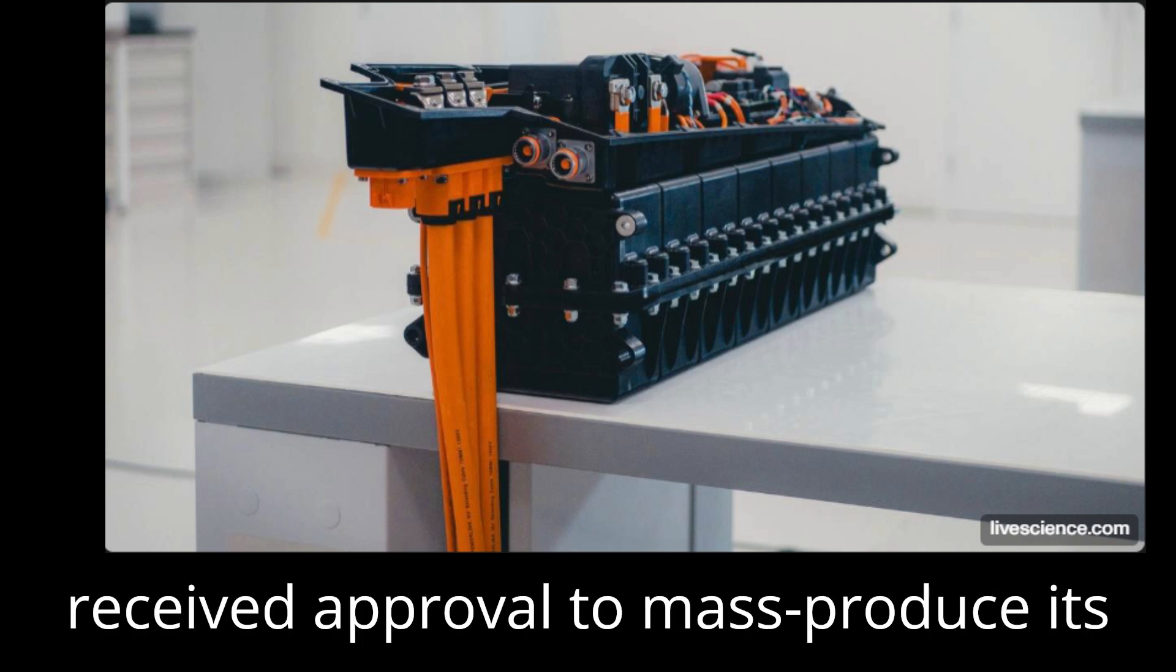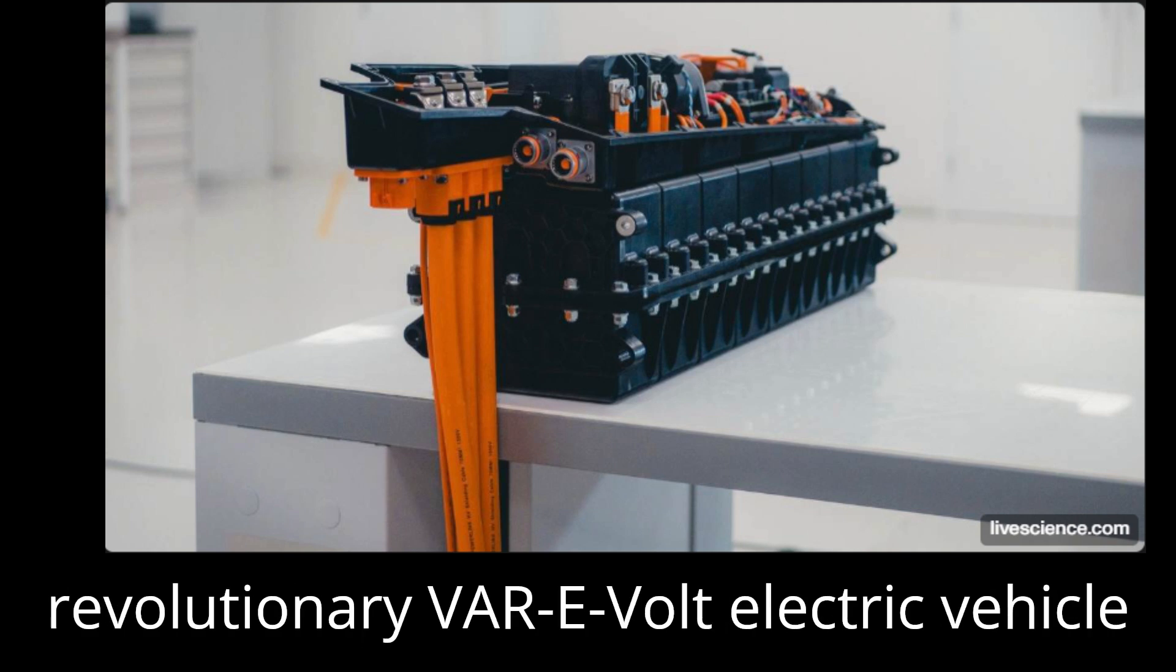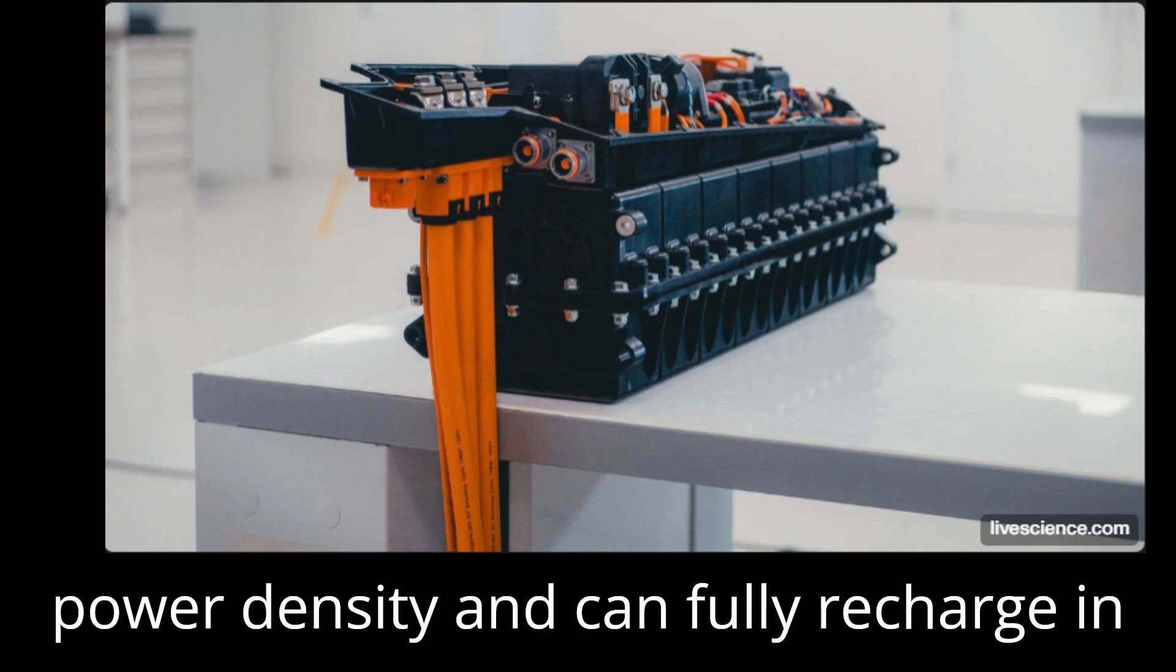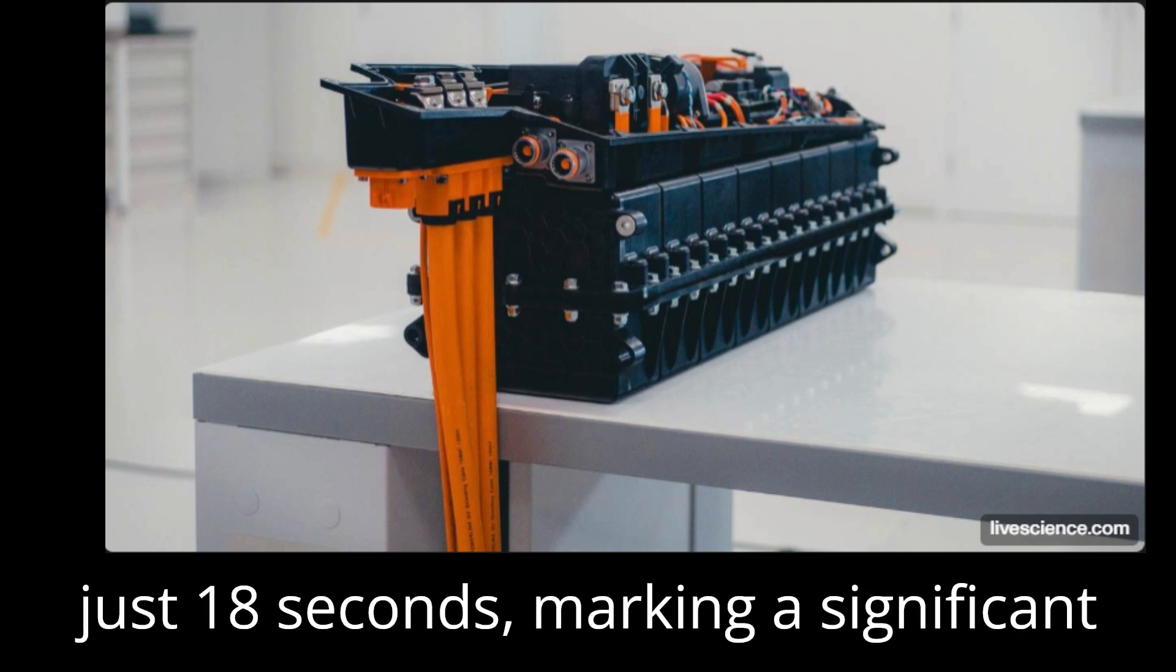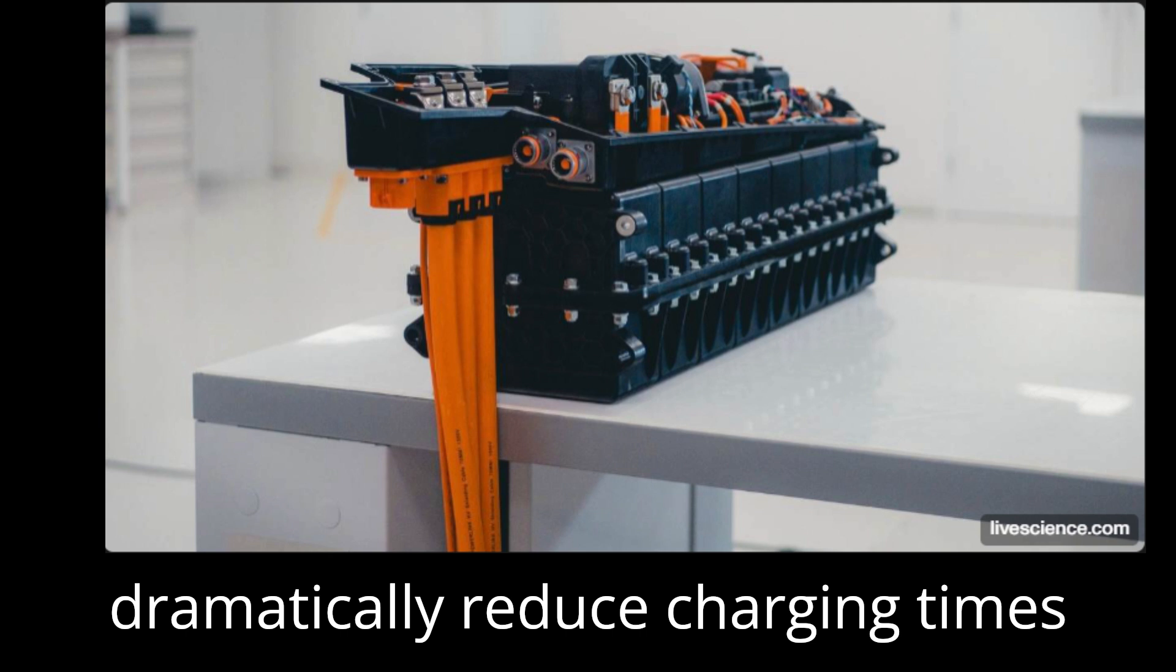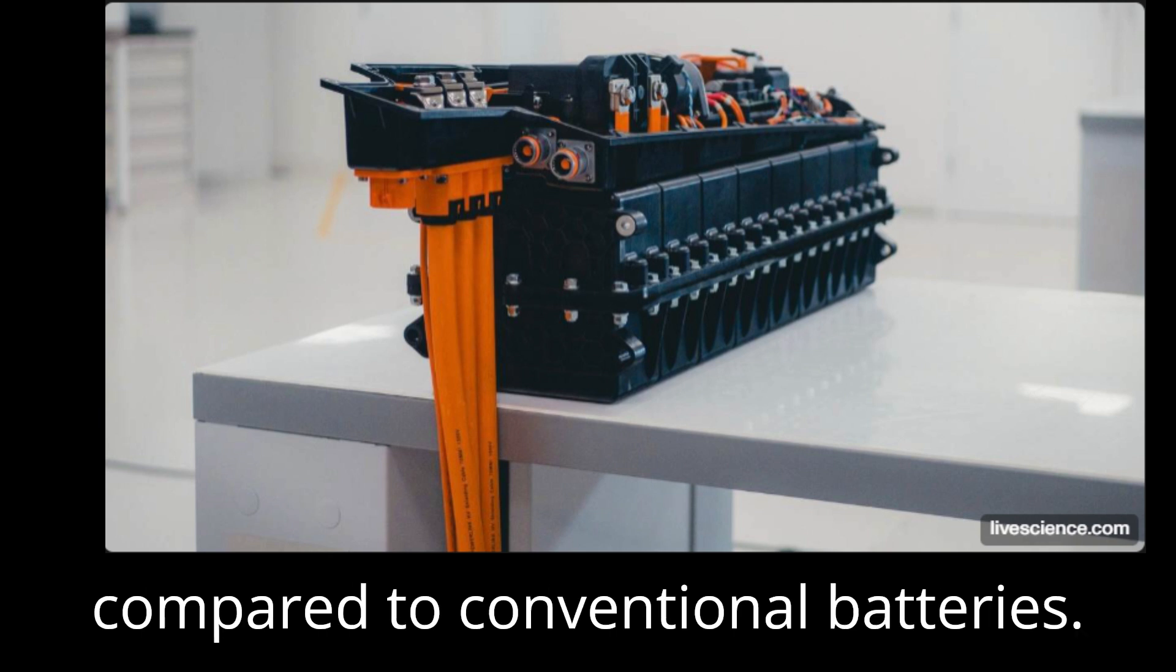The British company RML Group has received approval to mass-produce its revolutionary VAR-E-Volt electric vehicle battery, which boasts the world's highest power density and can fully recharge in just 18 seconds, marking a significant advancement in EV technology that could dramatically reduce charging times compared to conventional batteries.